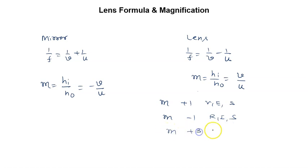Magnification is plus 3, plus means virtual, erect, 3 is greater than 1, so magnified. m is given by minus 4, minus means real, inverted, 4 is greater than 1, so it is magnified.